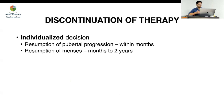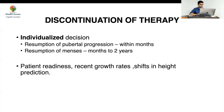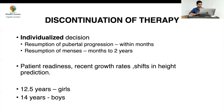Discontinuation is an individualized decision. After stopping therapy, pubertal progression should start within months and menses within months to two years — an important point to discuss when starting therapy. Patient readiness, recent growth rates, and shifts in height prediction must be considered. The guidelines state that after 12.5 years in girls and 14 years in boys, there is minimal improvement in adult height to justify continuation. For patients presenting late — with bone age above 12 or already at menarche — treatment may still offer some benefit, and since there are no clear RCTs, anecdotal improvement has been seen and the option should not be removed.